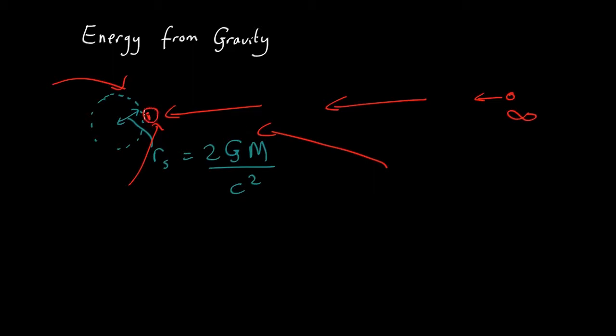So how much energy does something have if it falls from infinity to just above the event horizon? Well, the easiest way to calculate this is using potential energy. Gravitational potential energy, you're usually used to it as potential energy equals mgh.